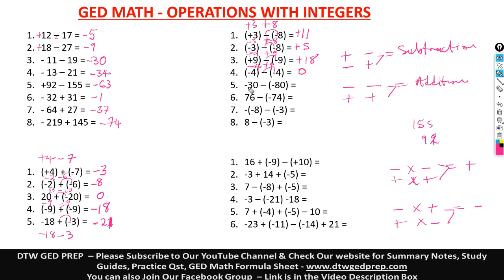Here we have negative 30. Negative times negative is positive, giving positive 80. Negative 30 and positive 80 means we do subtraction — 80 minus 30 gives 50. The sign of the bigger number is positive.